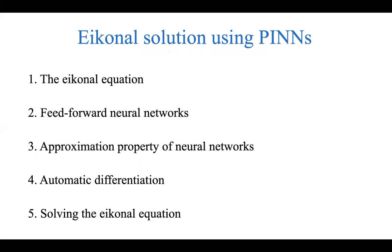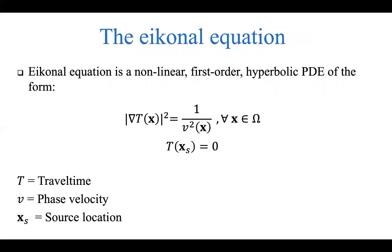To fully understand how the Eikonal equation can be solved using neural networks, we have to understand first a few ideas. Once we have these pieces of the puzzle, we can put them together. The first thing we need is the Eikonal equation. Here we have the Eikonal equation for the isotropic case for simplicity of illustration. Actually, we can add anisotropy and/or attenuation. The rest of the process will stay the same, only the equation will be a little more complicated. Here is the isotropic Eikonal equation and what we're looking for is the unknown travel time capital T. We have a boundary condition that says the travel time at the source location is equal to zero, and v denotes the phase velocity.